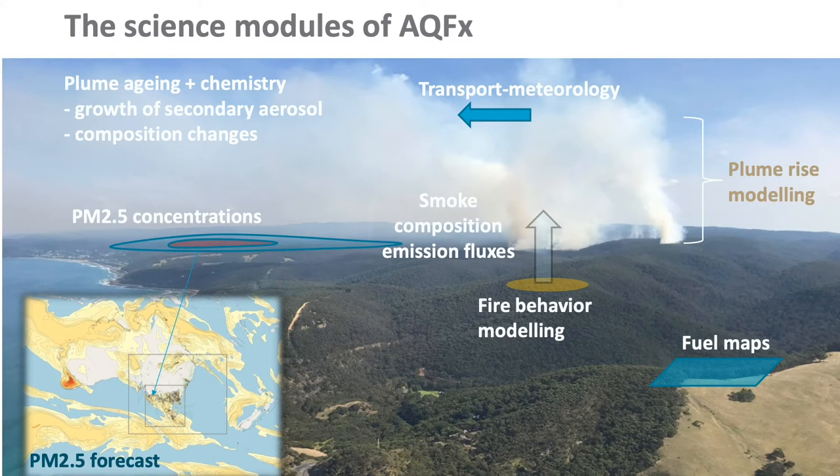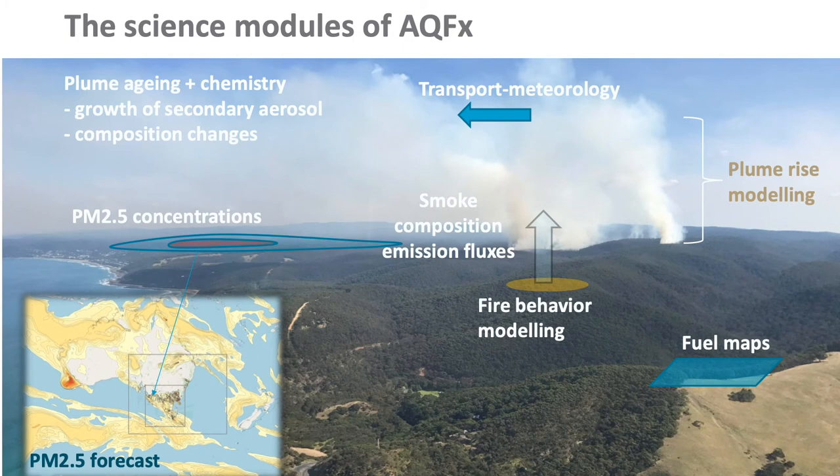An important component is how hot the smoke is - how high will the smoke plume go. We all remember from 2019-2020 there were smoke plumes so hot they made their way into the stratosphere and went around the world, but they weren't really influencing local smoke concentrations at ground level. Working out how high the smoke goes and whether it will interact with the ground and where people are living is a key part of this modeling.